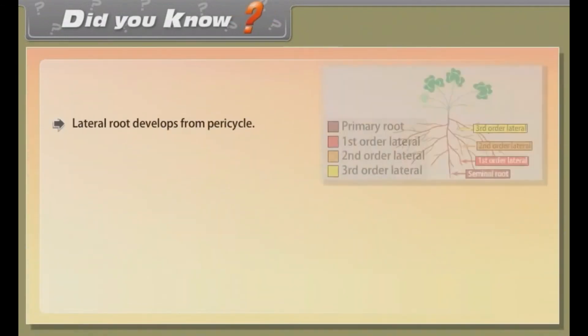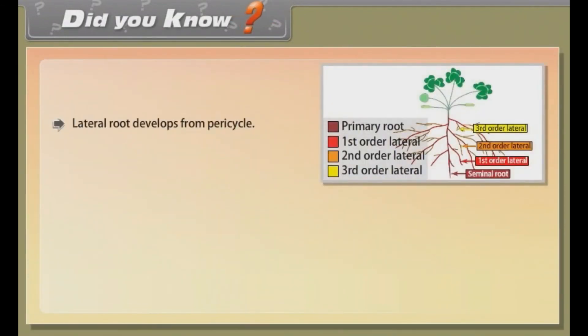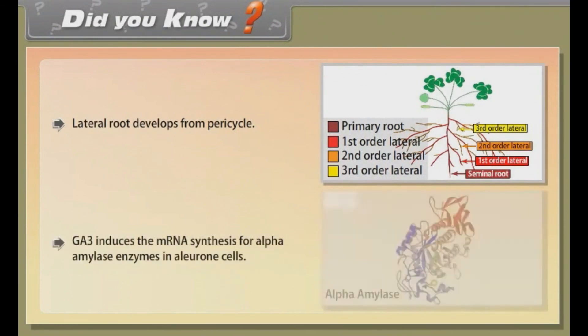Did you know? Lateral root develops from pericycle. GA3 induces the mRNA synthesis for alpha-amylase enzymes in aleurone cells.